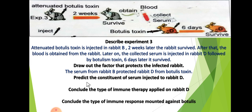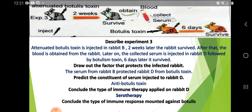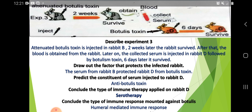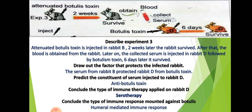Predict the constituent of the serum: what is inside the serum? It contains anti-bottlis toxin antibodies. Conclude the type of immune therapy applied on Rabbit D: it is serotherapy. Conclude the type of immune response mounted against the bottlis toxin: it is the humoral-mediated immune response, since in the serum we have antibodies — anti-bottlis toxin — and antibodies indicate a humoral-mediated immune response.